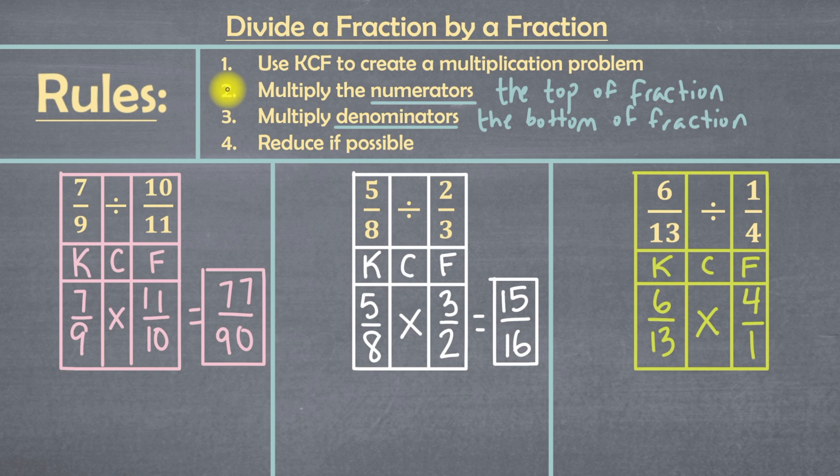Next, we'll go to rule 2, which is to multiply the numerators. That means we're going to multiply 6, because that's the numerator of this fraction, and 4, because that's the numerator in this fraction. And 6 times 4 equals 24.